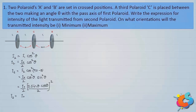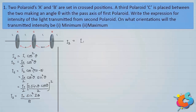Looking at the term inside the brackets: 2 sinθ · cosθ = sin2θ, so (2 sinθ · cosθ)² = sin²2θ. In the denominator there is 2² = 4 and one more factor of 2, giving a denominator of 8. So the required expression for the emergent intensity is: I3 = (I₀/8) · sin²2θ.